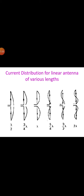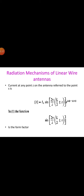Let us proceed to develop the far-field equations for a symmetrical thin linear center-fed antenna of length L. The retarded value of the current at any point on the antenna, at a distance s, is given by: I = I0 * sin(2π/λ * (L/2 ± z)) * e^(jω(t - r/c)). In this equation, the sin term, sin(2π/λ * (L/2 ± z)), is the form factor for the current on the antenna.